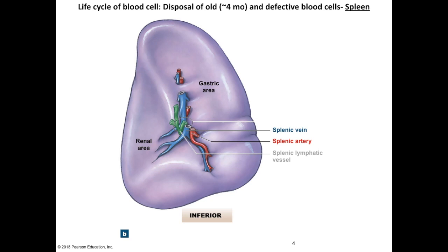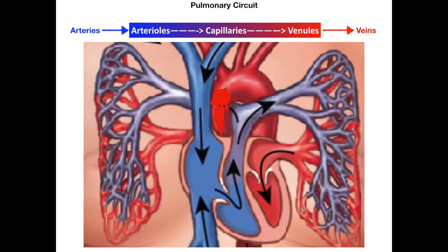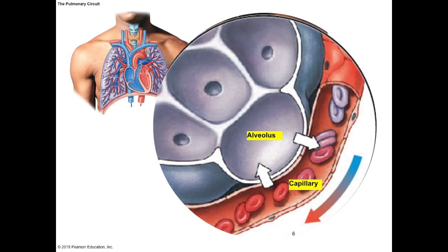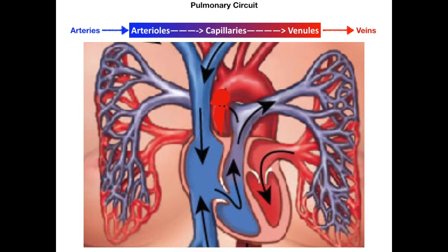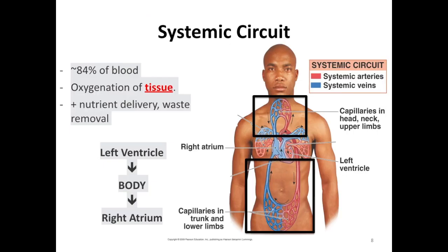Red blood cells last about four months, and after that time, or if they are damaged or defective, they are selected out for destruction within the spleen, where iron and other components are recycled. Blood picks up oxygen in the lungs through the pulmonary circuit, where deoxygenated blood picks up oxygen from capillary networks surrounding the alveoli and is brought back through the pulmonary veins into the heart. Blood flow from the heart to the rest of the body and back is the systemic circuit, whose main function is oxygen and nutrient delivery to tissues and waste removal.